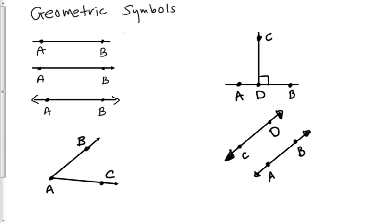The first thing we have here is a line segment. A line segment is very similar to a line except that it actually has two endpoints. To name the line segment we use two points on the line. So the two points on this line are A and B.